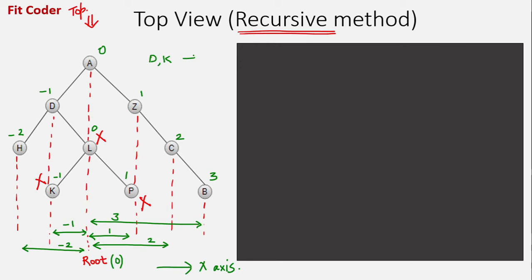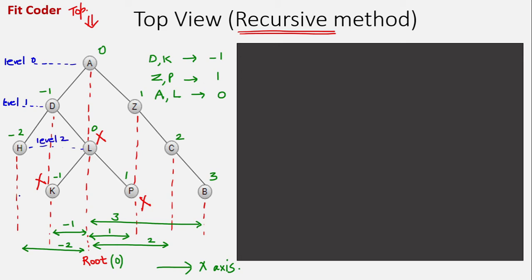Node d and k are both at minus 1 distance, z and p are both at distance 1, and node a and l are both at distance 0. When two nodes are at the same horizontal distance from the root, only one would be visible - the node which has a lower level. This is level 0, level 1, level 2, level 3. Node d is at level 1 and k is at level 3, so d would be visible. Z has a level of 1 and p has a level of 3, so z would be visible. A has a level of 0 and l has a level of 2, so a would be visible.